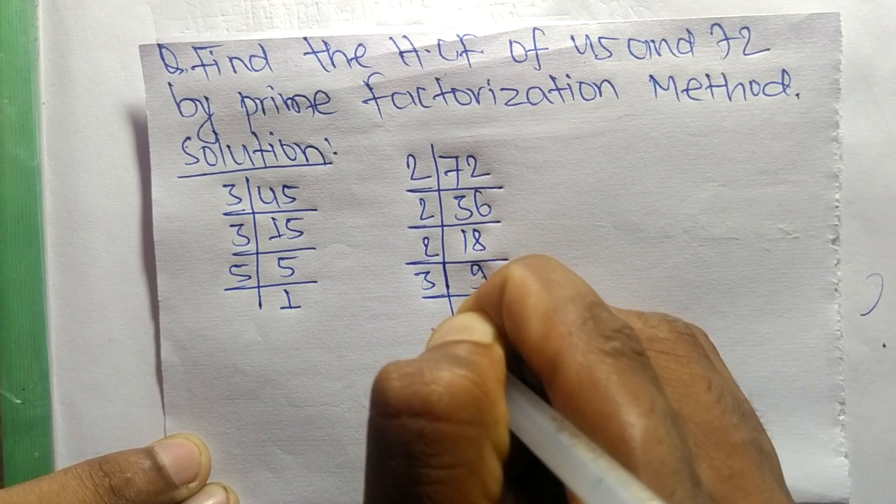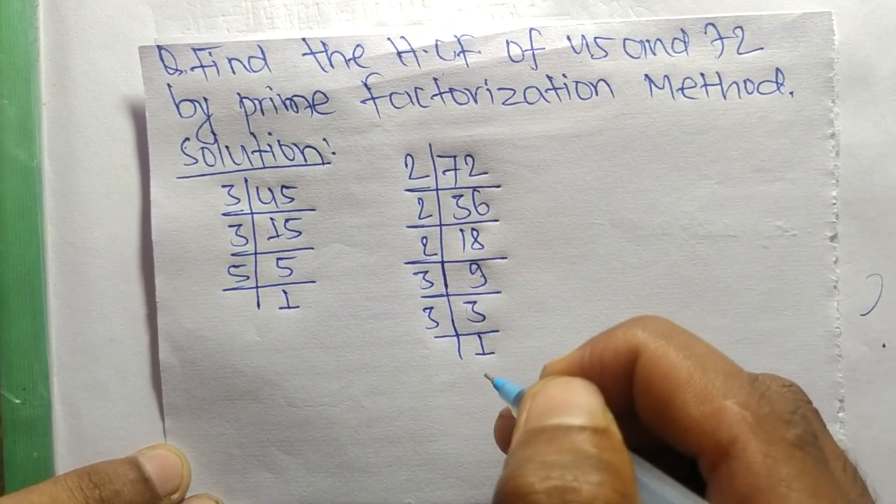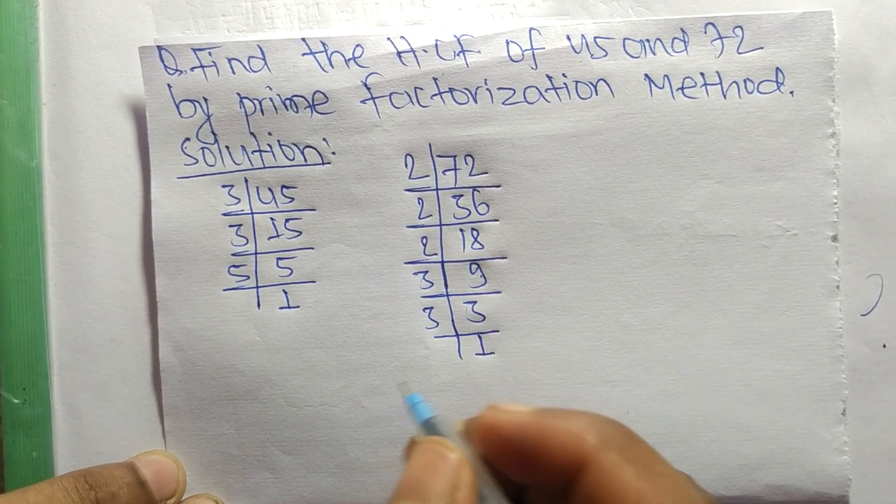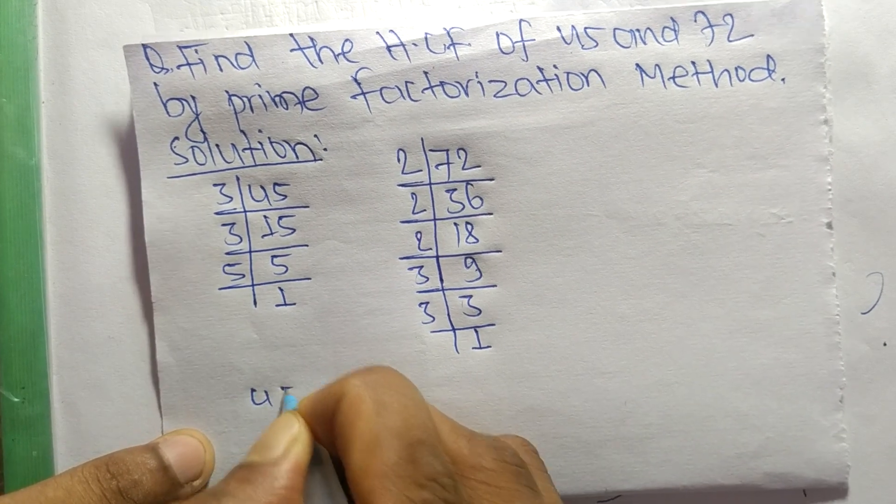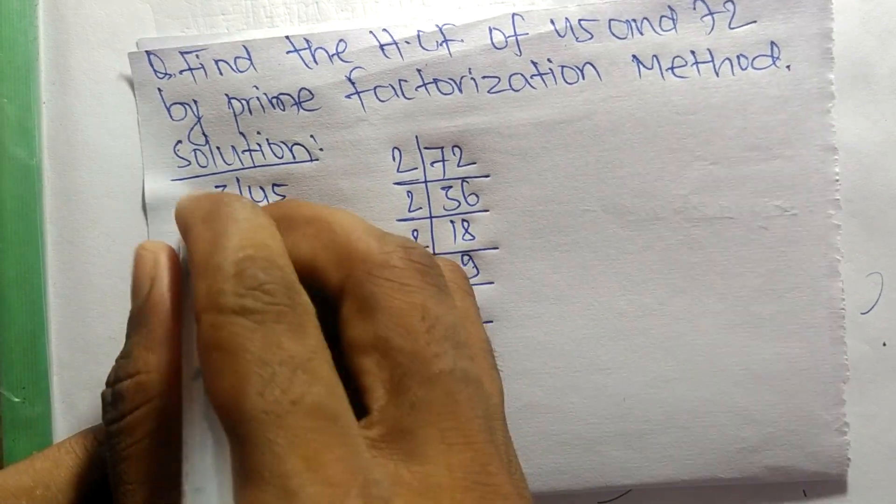Now from these prime factors we can write 45 equals 3 times 3 times 5.